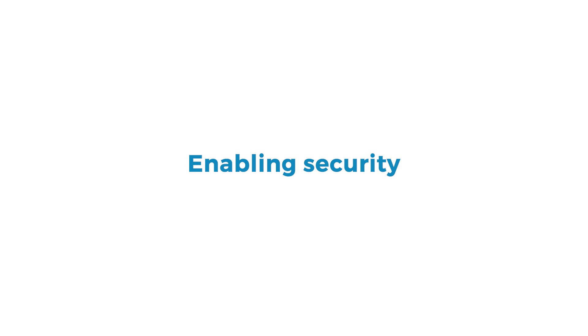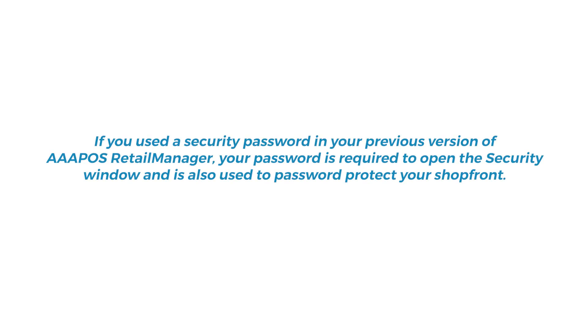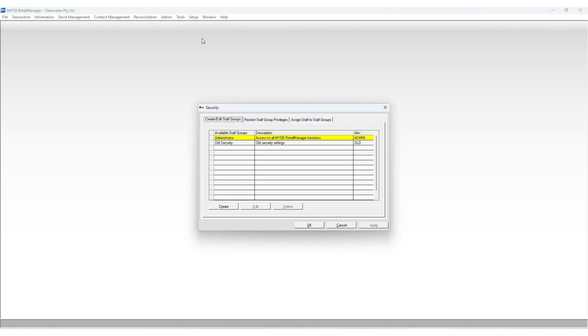Step 1: If you used a security password in your previous version of AAA POS Retail Manager, your password is required to open the security window and is also used to password protect your shop front. Step 2: When you first open the security window, one or two staff groups will be predefined — the old security staff group and the administrator staff group.